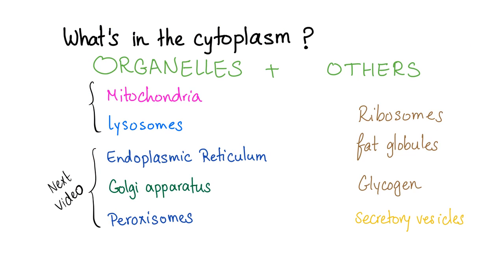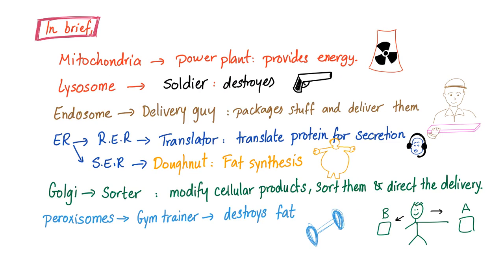The cytoplasm contains organelles and other stuff. In this video, we will discuss mitochondria and lysosomes. In the next video, we'll discuss the endoplasmic reticulum, Golgi apparatus, and peroxisomes. Others in the cytoplasm include ribosomes, fat globules, glycogen, and secretory vesicles.